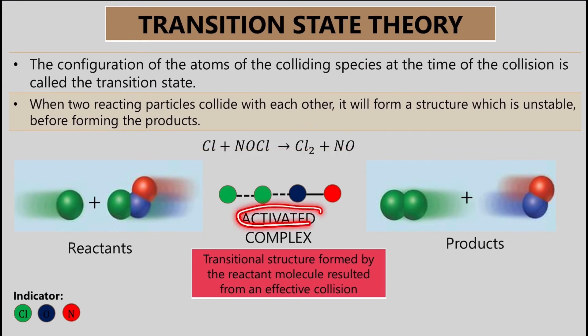Activated complex ini, dia adalah transitional structure from the reactant molecule resulted from an effective collision. Kalau kamu lihat pada rajah activated complex itu, dia ada garis putus-putus dan juga garis yang tidak putus-putus.